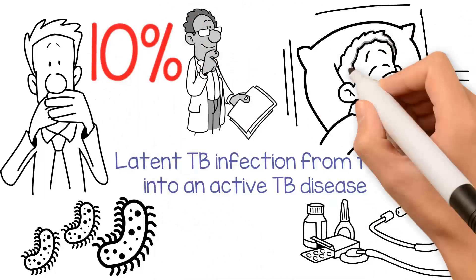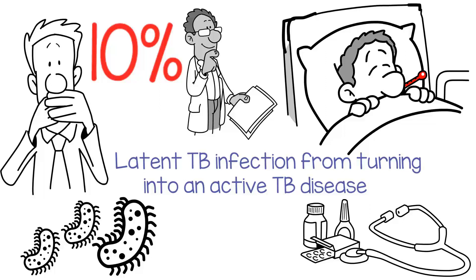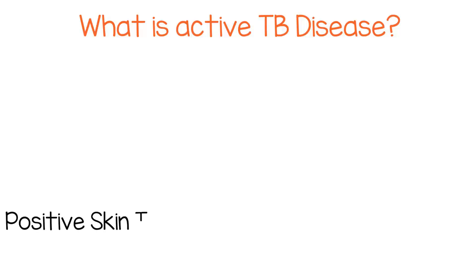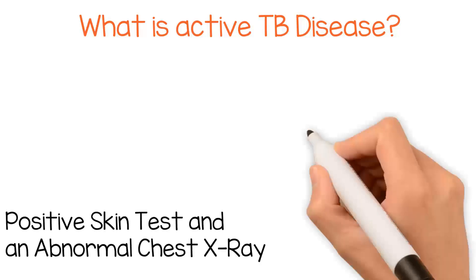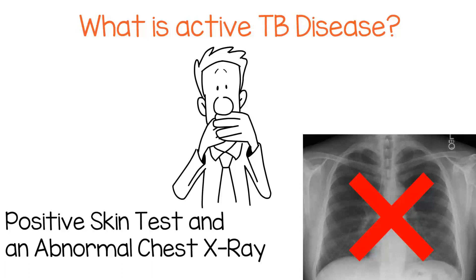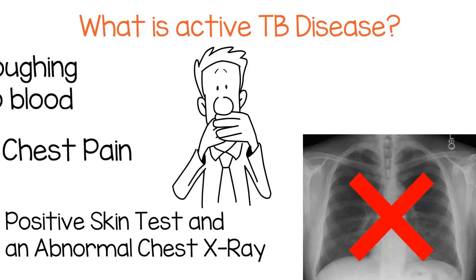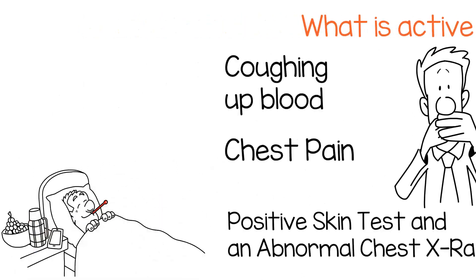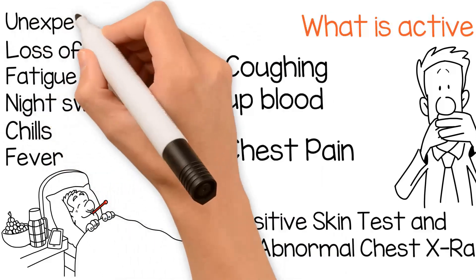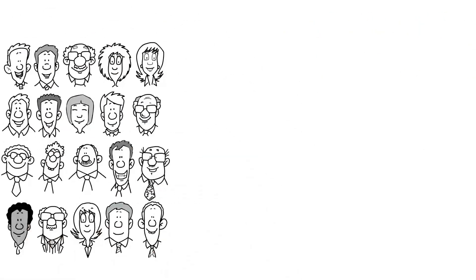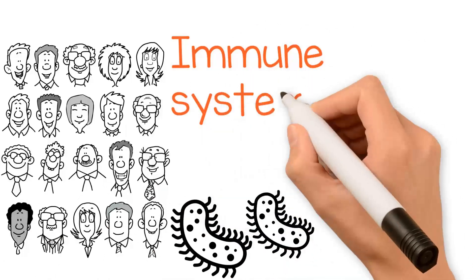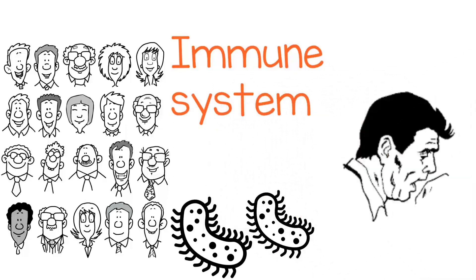Without treatment, there is a 10% lifetime risk that latent TB infection can progress to active TB disease. What is active TB disease? People with a positive skin test and an abnormal chest x-ray have active TB disease. They may also have a cough that lasts three weeks or more, chest pain, coughing up blood, and general symptoms such as fever, chills, night sweats, fatigue, loss of appetite, and unexpected weight loss. In people with active TB disease, the bacteria multiplies and overwhelms the immune system. This can occur slowly or quickly, and without treatment, symptoms will get worse.